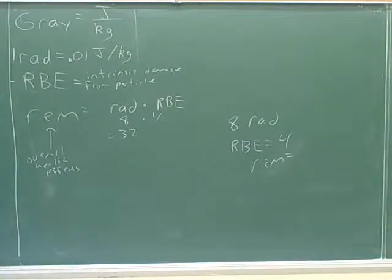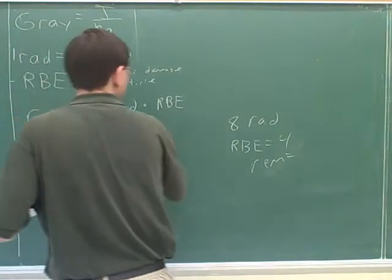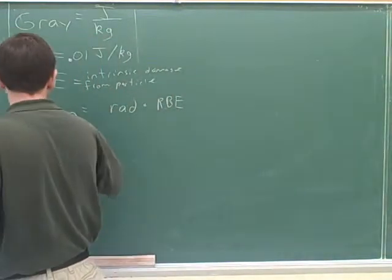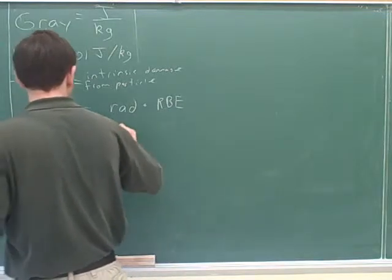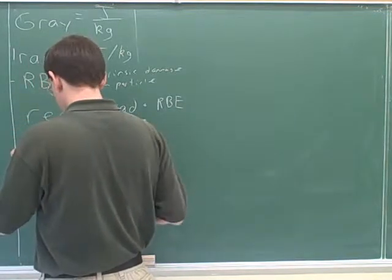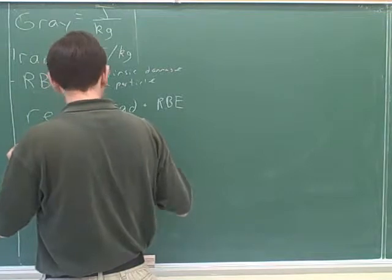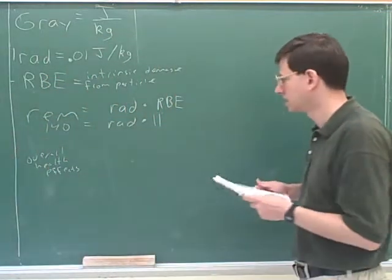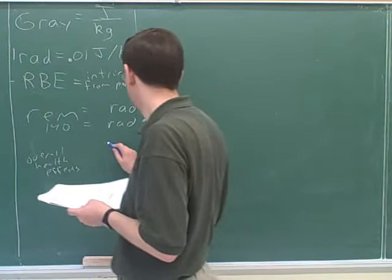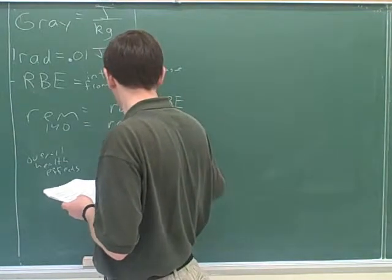Okay, I guess we're ready to try the problem. So it's 1,140 equals rad times 11. Good. So 140 over 11 is 12.7.